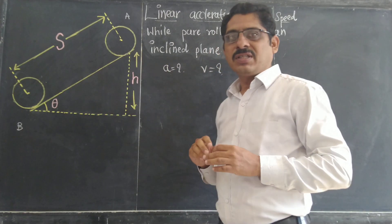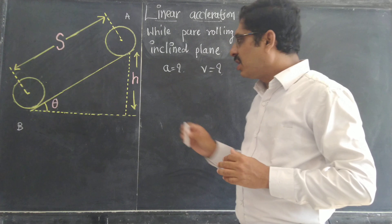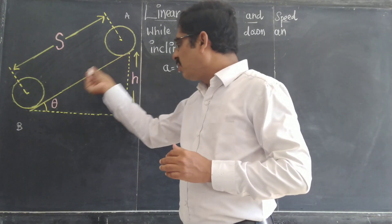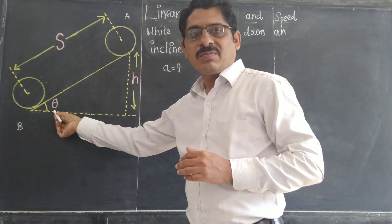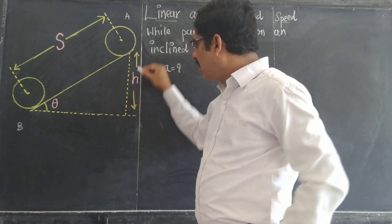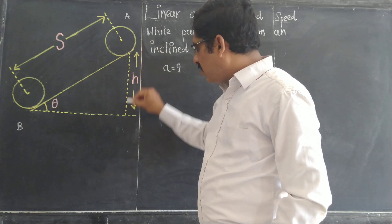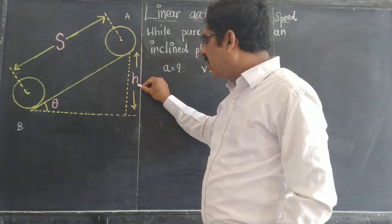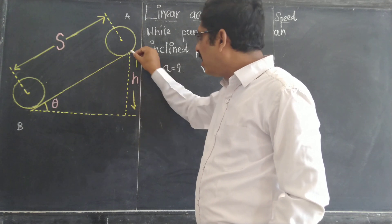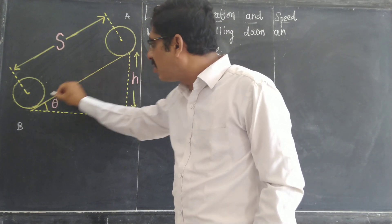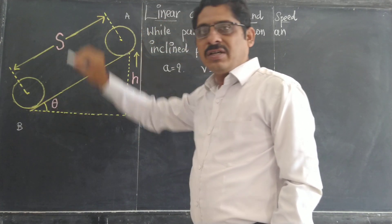The inclined plane makes a certain angle theta. There is a top position and a bottom position. The horizontal height is H, and the length along the inclined surface from top to bottom is S.